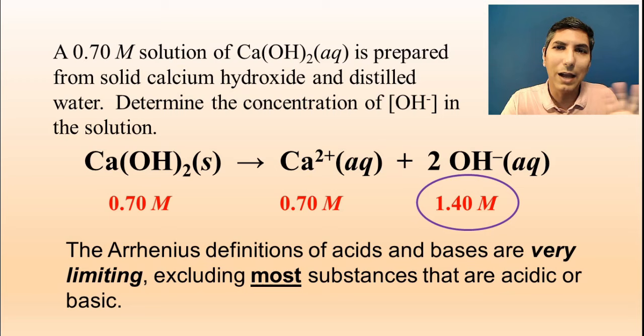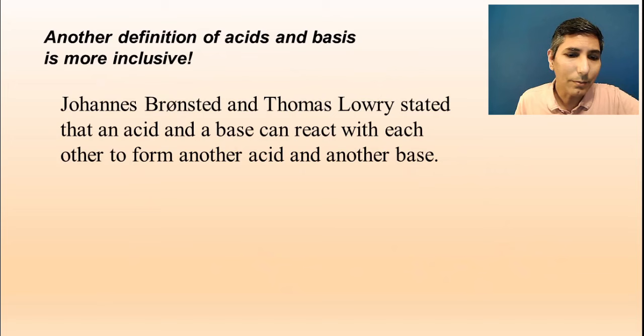So there's another definition that is a whole lot more inclusive. And this is the one that we're going to be focusing on in AP chemistry. And this is a definition that was first produced by Johann Bronsted and Thomas Lowry. And they basically said that you can't have an acid unless you have a base. And that's an interesting concept. An acid has to react with a base. And when they react with each other, they form another acid and another base.